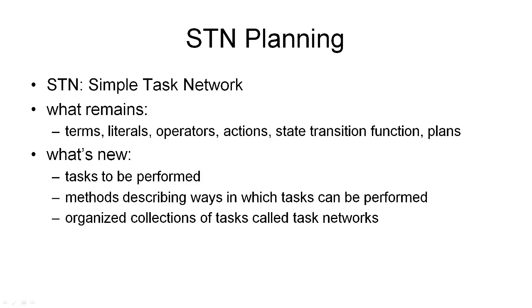A lot of what we've seen so far carries over into task network planning. For example, we have terms that can be either variables or constants to describe the objects in our domain. And we have literals that express propositions that are either true or false. We also have operators that describe types of actions that we can execute in our domain, and of course their instances, which are actions we want to execute. The semantics is still based on state transition systems, and we still have plans, which are the solutions to our planning problems.